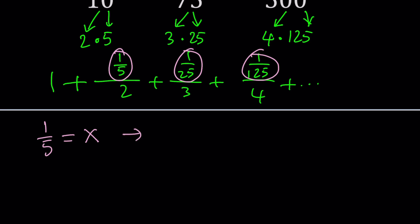Then one over 25 becomes x squared. And of course, one over 125 becomes x cubed. Now take a look at this. Replace these with the variables and leave the one alone.